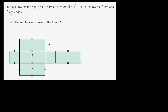Let's make sure we understand what this represents. It has 5 centimeter edges — this is one of the 5 centimeter edges right over here. Any edge with a double hash mark is also going to be 5 centimeters. So this edge is 5 centimeters, this is 5 centimeters, this is 5 centimeters, and these two over here are also 5 centimeters.